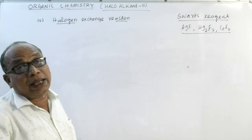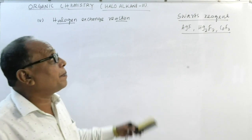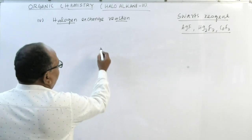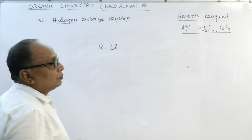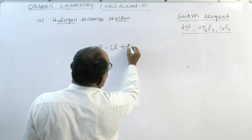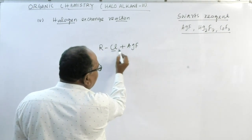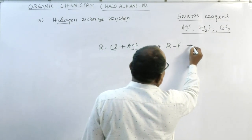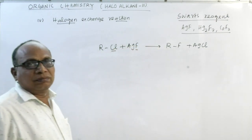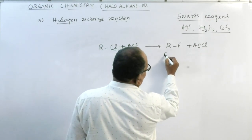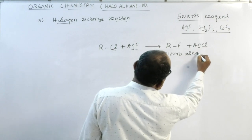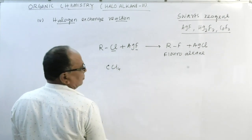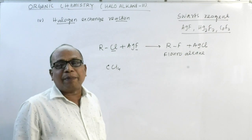Swarts reagents are used to prepare alkyl fluorides because there is no other method to prepare alkyl fluoride. When alkyl chloride is treated with Swarts reagent HgF₂, the fluorine exchanges with chlorine to give RF (fluoroalkane) plus HgCl. For example, carbon tetrachloride (CCl₄) treated with HgF or Hg₂F₂ gives CCl₃F (chlorofluorocarbon) plus HgCl.